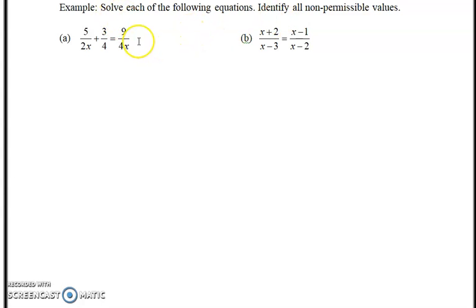There's a couple ways you can approach these. In this first one, I multiply both sides by the least common denominator. First, identify the least common denominator. The number is going to be 4 and the variable is x, so the least common denominator is 4x.